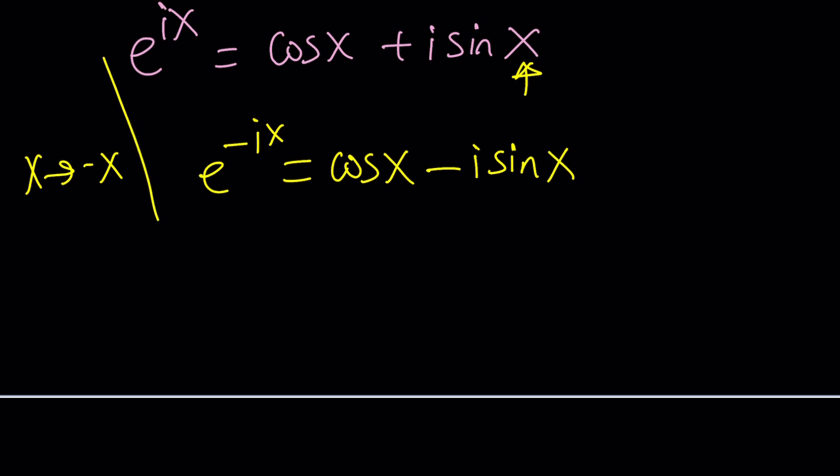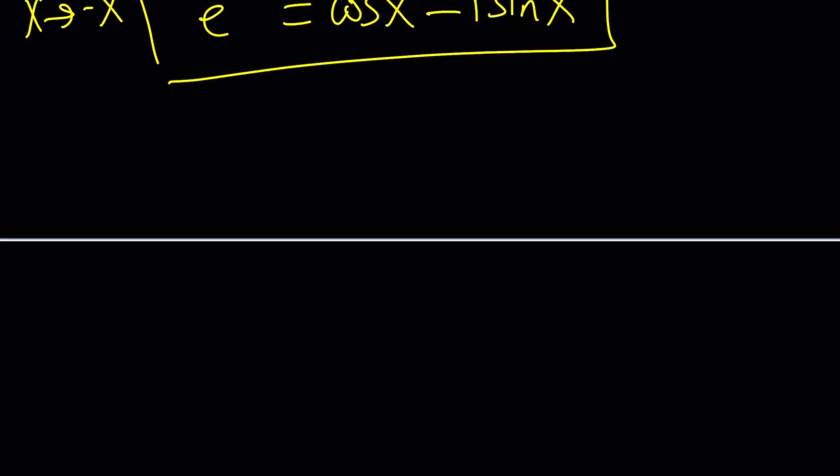Now if you go ahead and take a look at these two equations and subtract them and divide by two, you end up finding an identity for sine of x. And x, by the way, doesn't have to be real. It can be pretty much anything. You can write it in a different form. If you multiply by i or negative i, it doesn't really matter. No big deal, because our goal is to find sine of i, right?